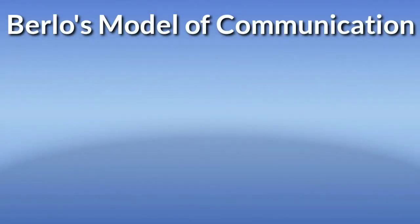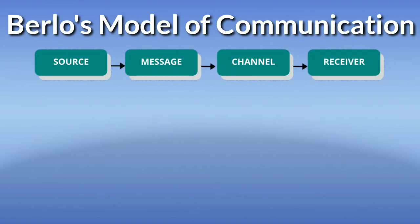Berlo's model could be summarized as delivering a message through a platform to a recipient. Two actions are inherent in this model: encoding happens on the sender's end, involving how the message is transmitted, and the receiver must decode the message through the channel that was used. Noticeably absent in the SMCR model is feedback from the recipient back to the sender. In other words, it is a one-way process.